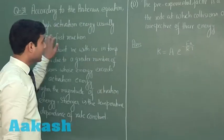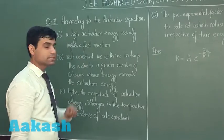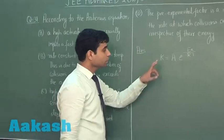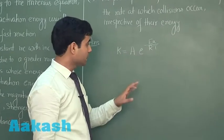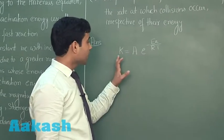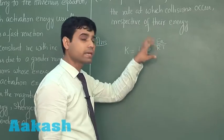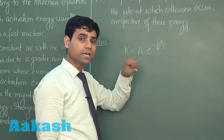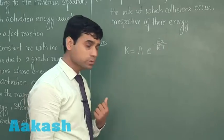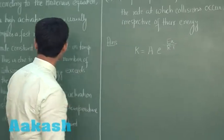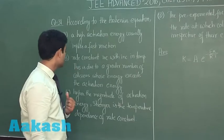If we have a higher value of Ea, then k will be less from the equation. We can easily say that when we have a higher value of Ea, the rate constant is less, so the rate of reaction will be slow. Therefore, this cannot be the correct option.